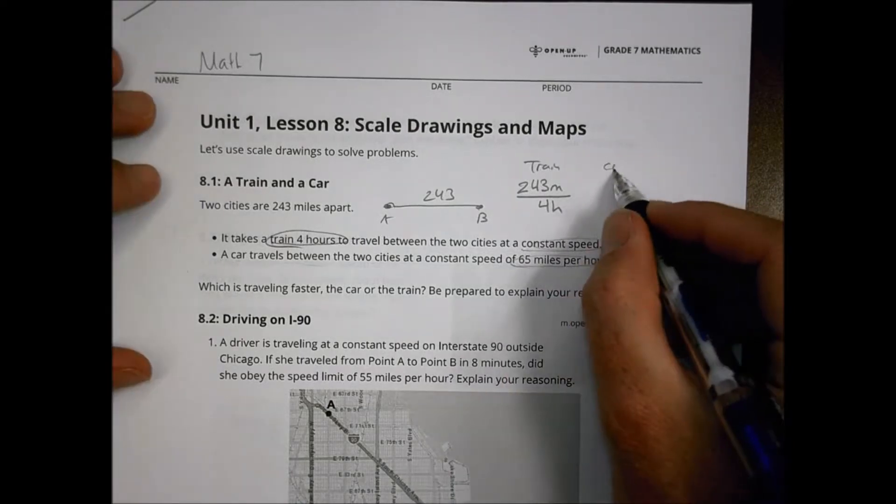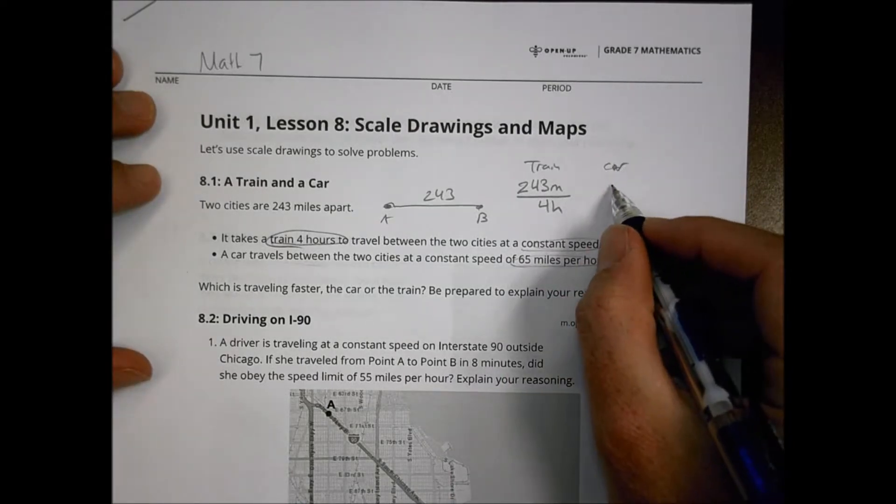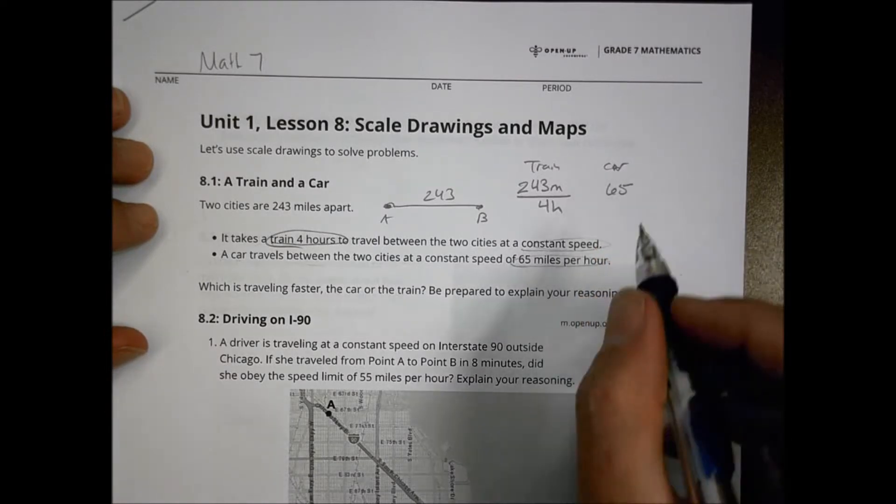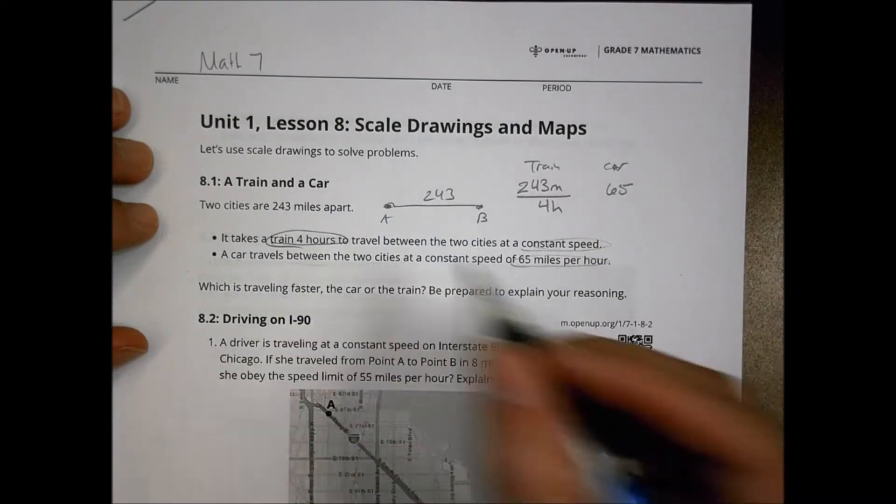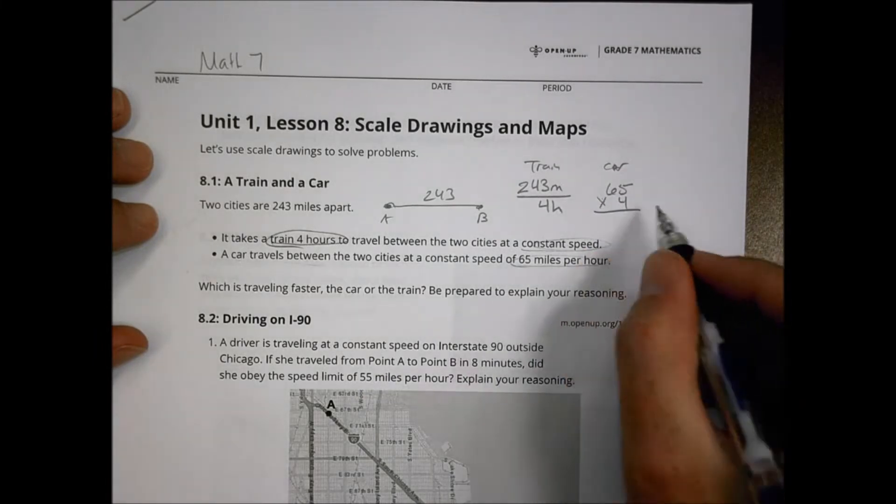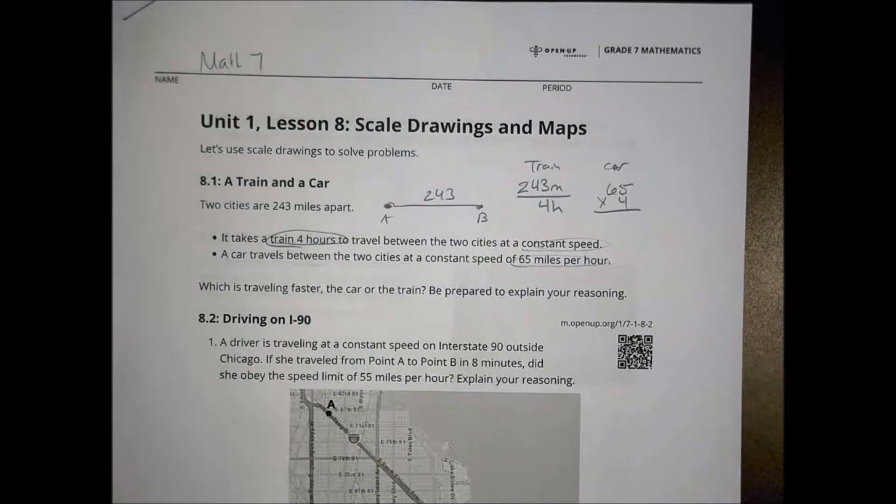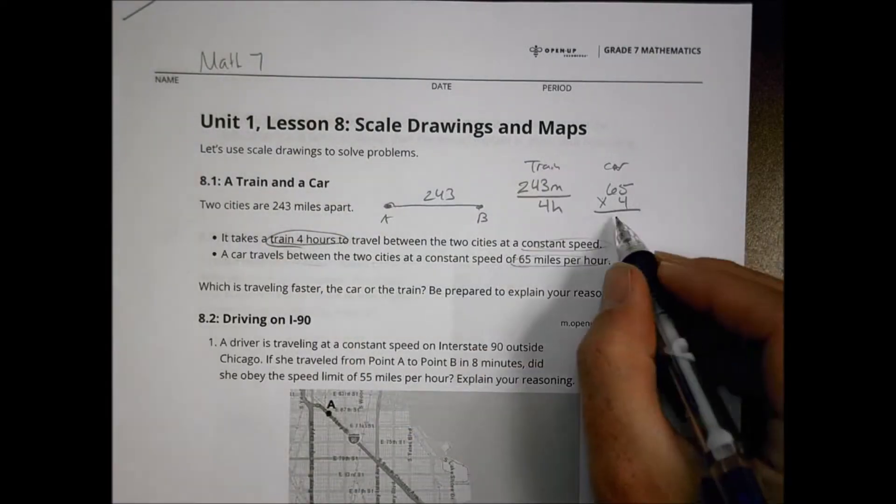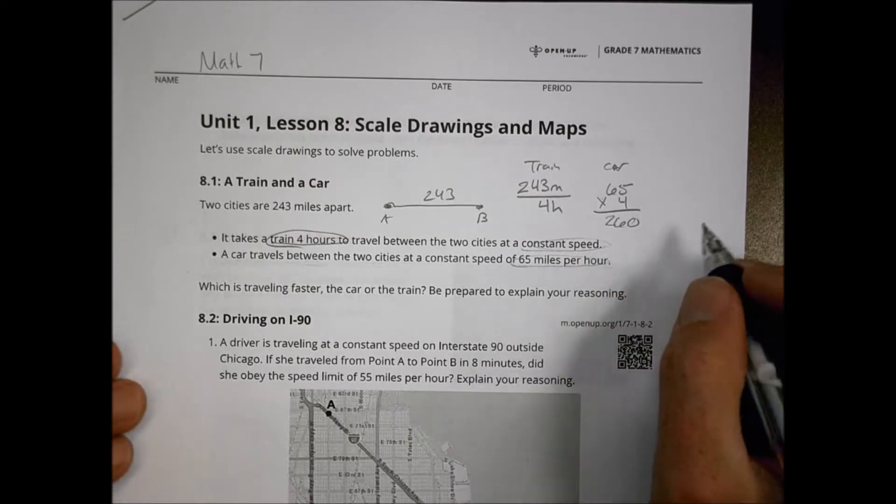But then you had another thing. So the car travels between two cities at a constant speed of 65 miles per hour. So it's going 65 miles per hour to get there as well. So let's say a car is going 65 miles per hour for four hours.